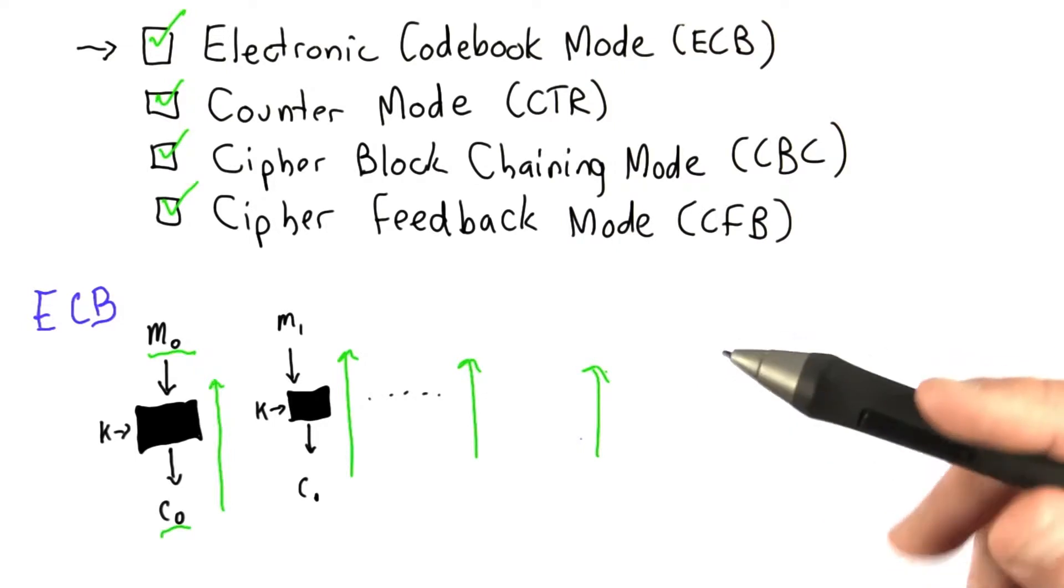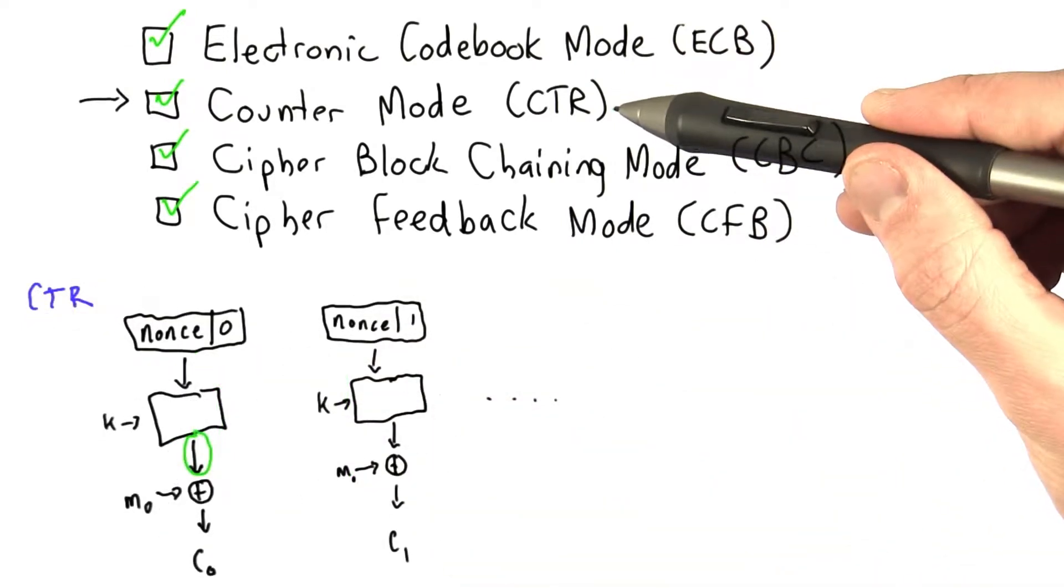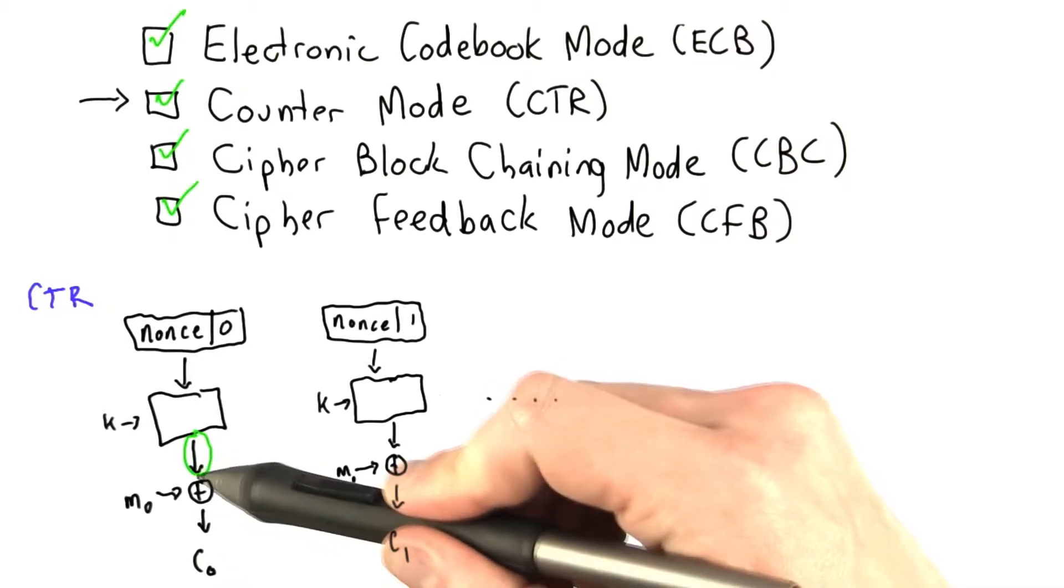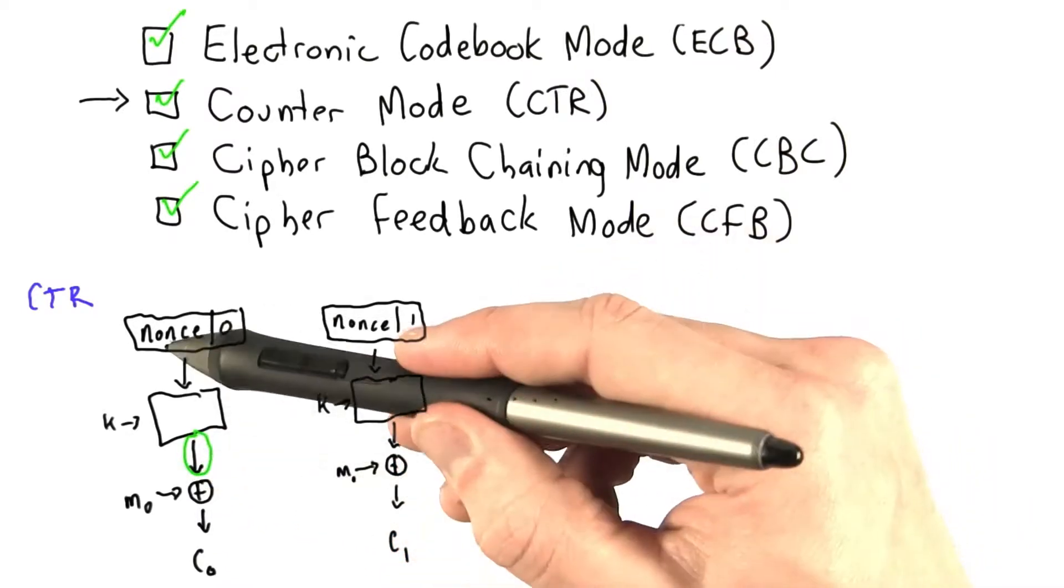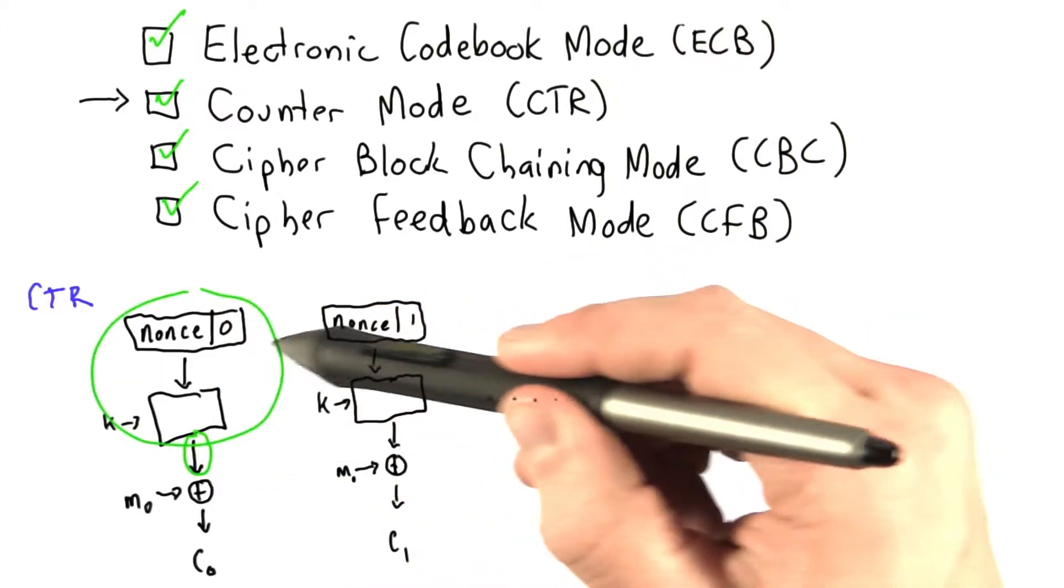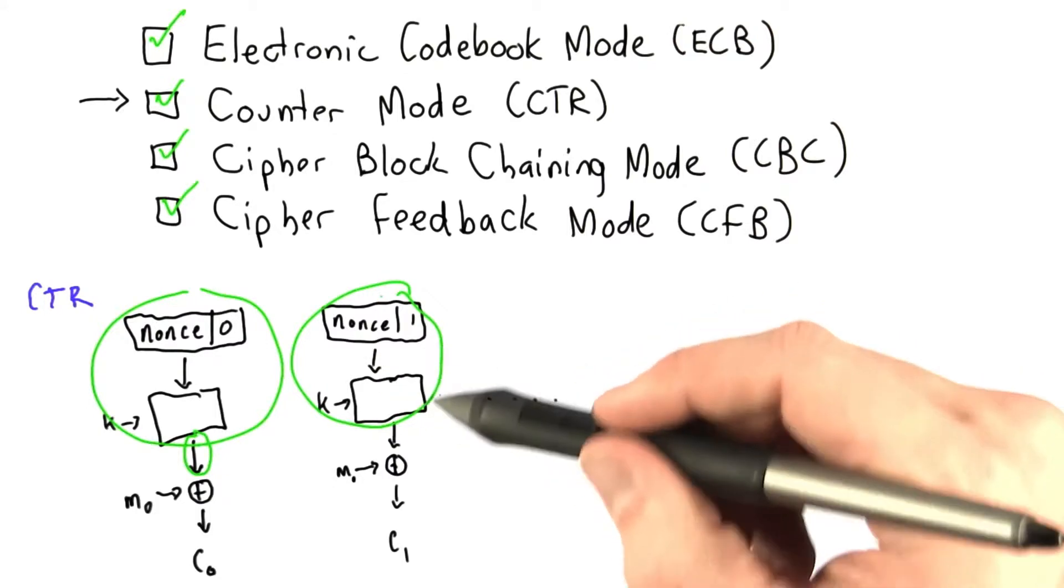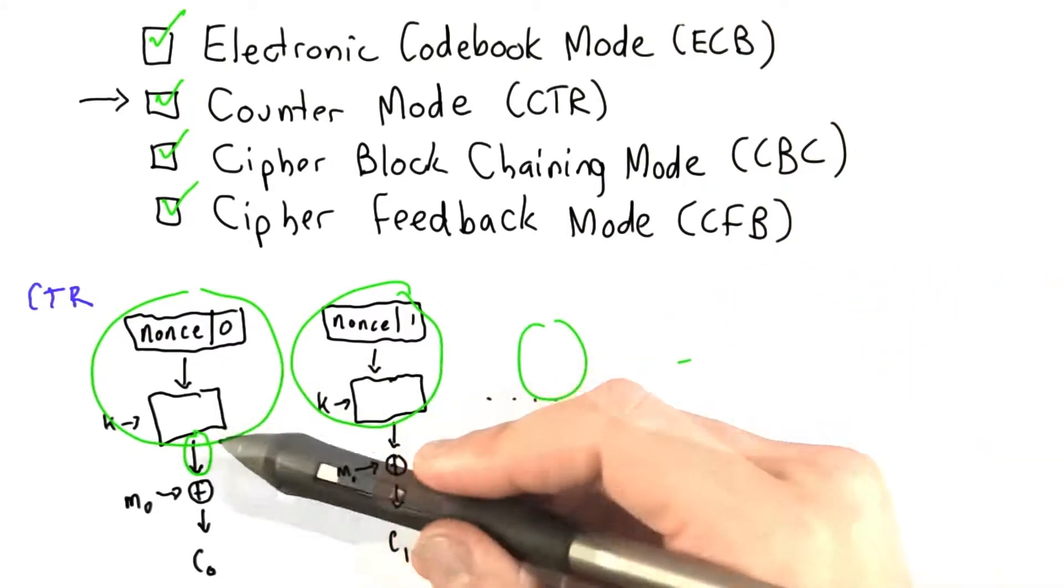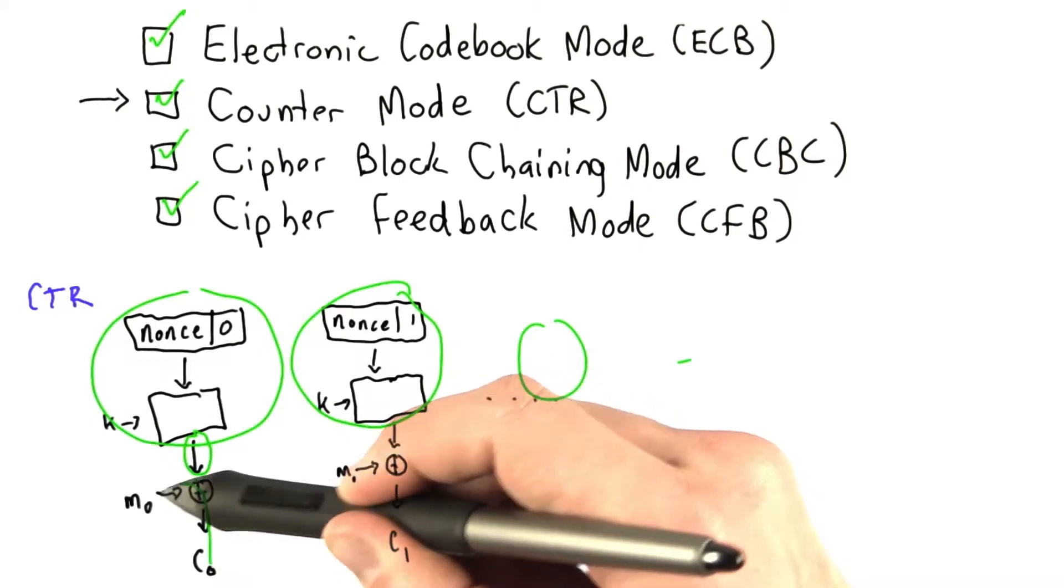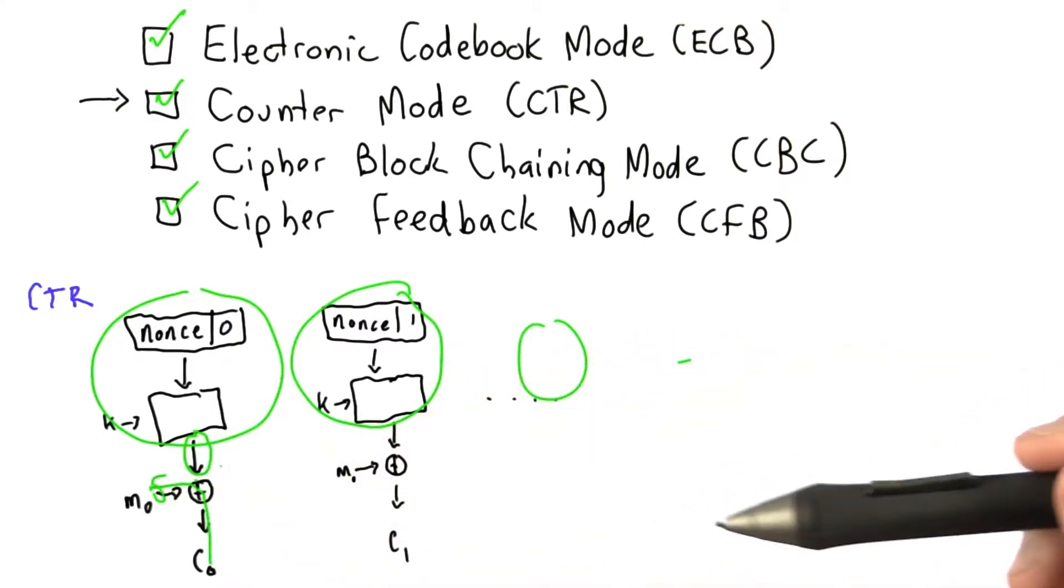Counter mode is also decryptable in parallel. For counter mode, the important part that we need to calculate is this bit into the XOR. And we know our nonce and we know our counter in advance. So this whole chunk can be calculated on one processor. This whole chunk can be calculated on another processor and so on. And once we calculate those, we can calculate our XORs to reverse the C1 into the message. And this can also all be done in parallel.